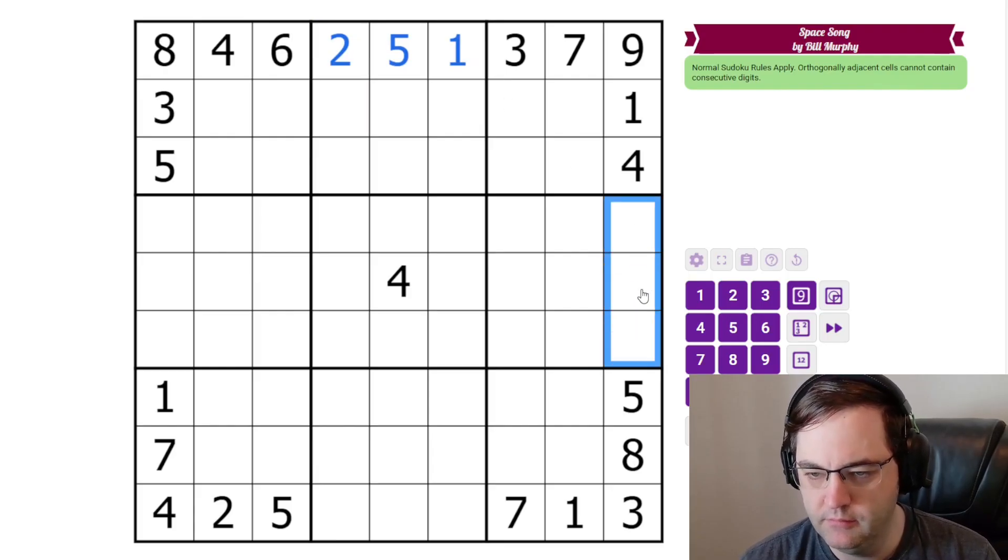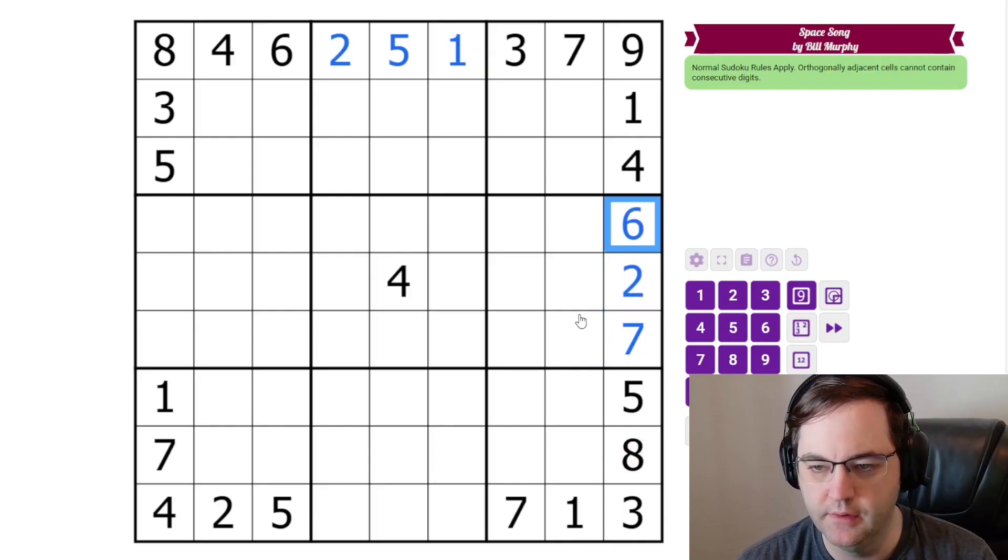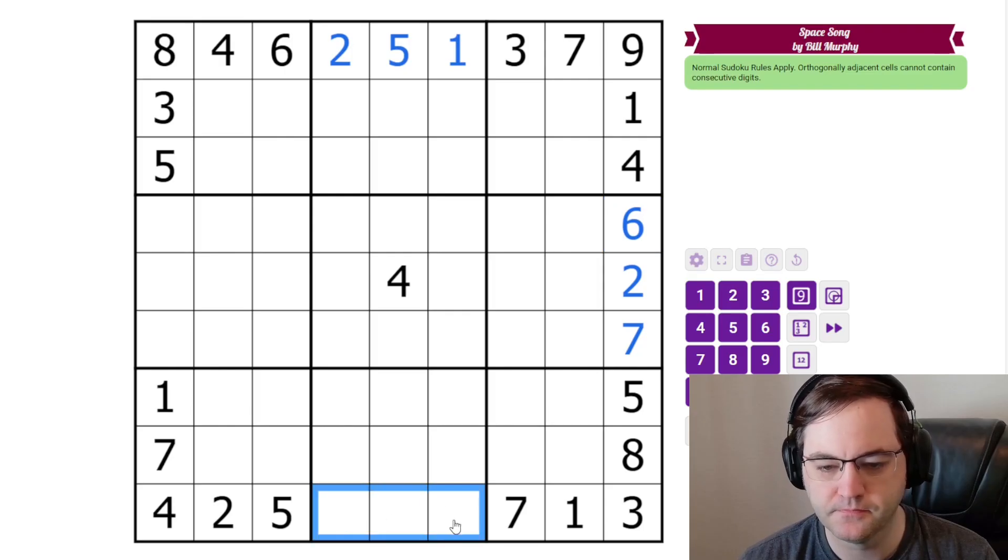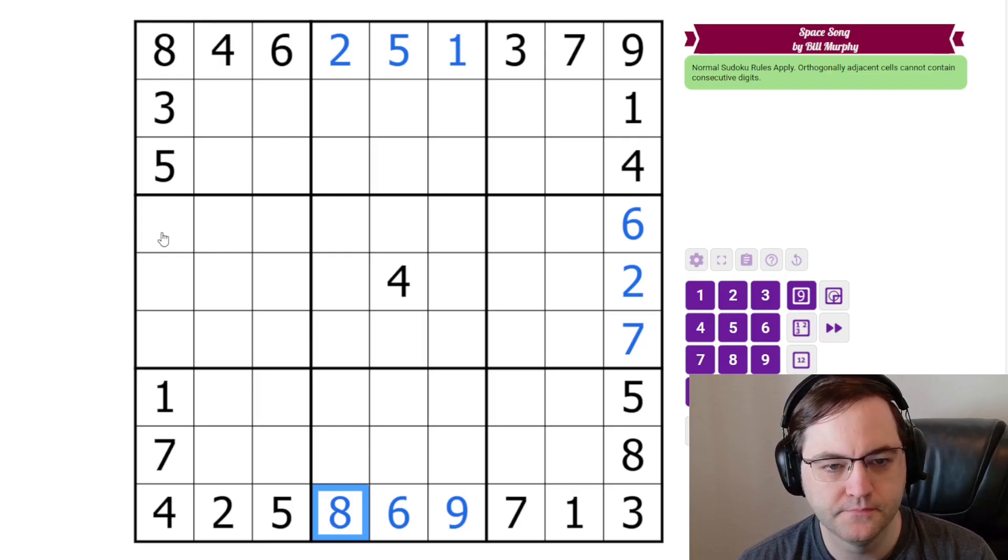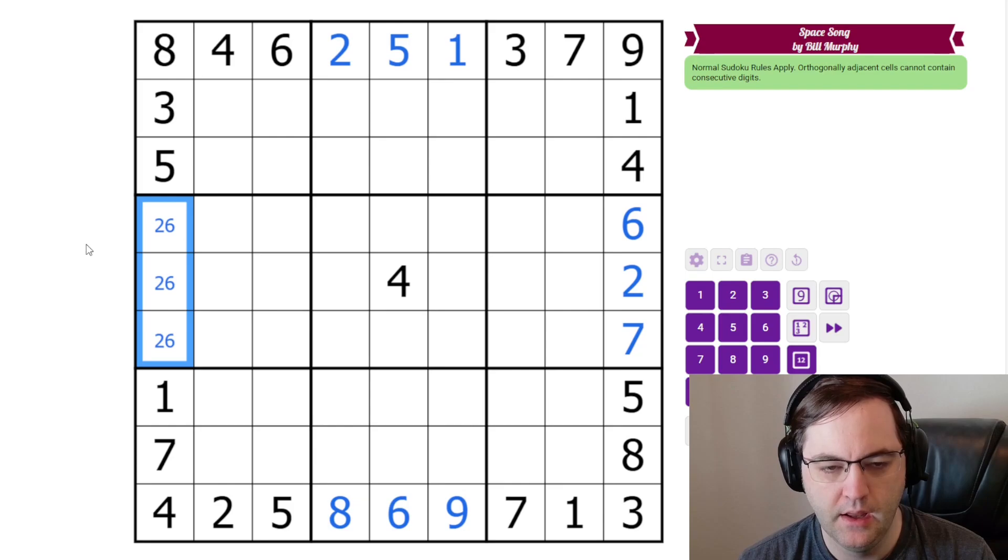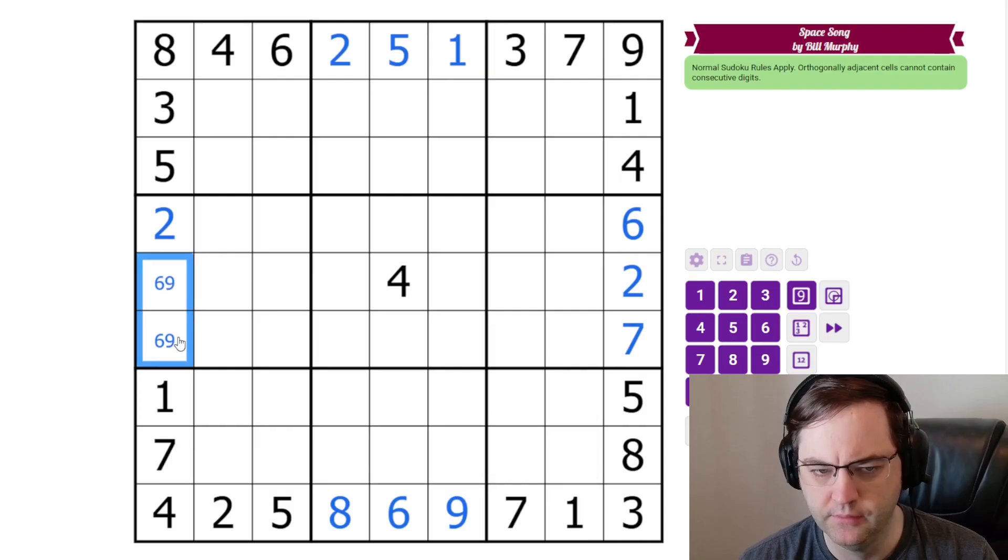Here, we have 2, 6, and 7. 6 and 7 can't go next to each other, so 2 has to go in the middle. And 5 tells us that 6 and 7 go in that order. These are 6, 8, 9. 8 and 9 are consecutive, so they can't go next to each other. The 7 can't go next to the 8. And then these are 2, 6, 9. None of these are consecutive with each other. However, the 1 here tells us 2 can't go there. 2 also can't go here. So, this is our 2, and we're left with a pair here that we can't resolve yet.